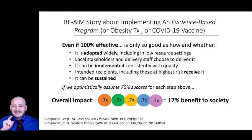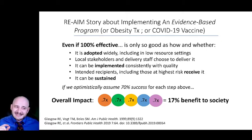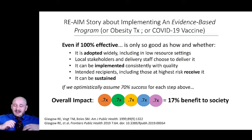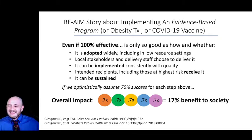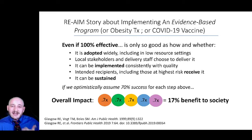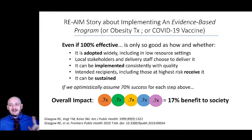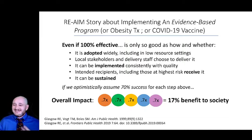This example that RE-AIM National Steering Committee members like to use shows how impactful implementation can be. Think about an intervention that is 100% effective — it can only be as good as the people it reaches. Different phases of implementation include: is it adopted widely, including in low resource settings? Do local stakeholders identify and deliver it? Can it be implemented consistently and with quality? Is it reaching its intended audience? And can it be sustained? If you applied a 70% threshold for each of those stages, you would end up with an intervention that was only about 17% impactful.